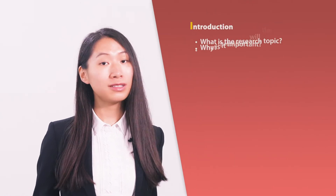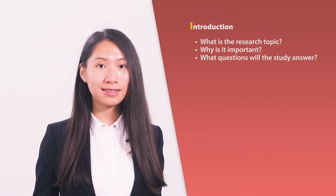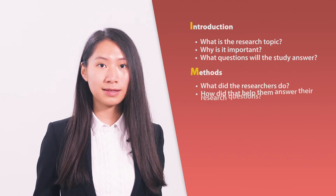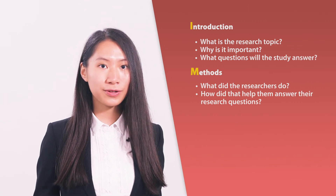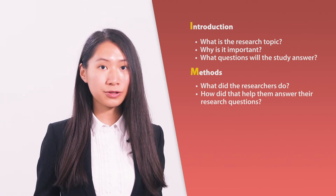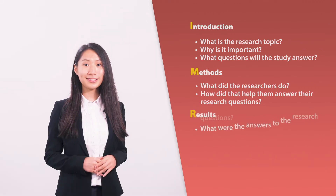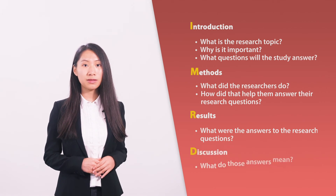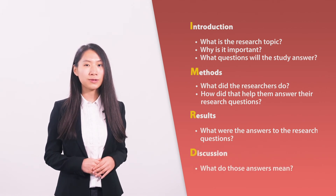We've seen that IMRAD texts have different kinds of information in different places. Reading an IMRAD article will be easier if you look for answers to specific questions in each section. Read the introduction with these questions in mind: What is the research topic? Why is it important? What questions will the study answer? When reading the methods, ask: What did the researchers do? How did that help them answer their research questions? The results section tells you what the answers to the research questions were. And in the discussion section, ask: What do those answers mean?